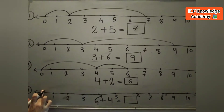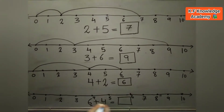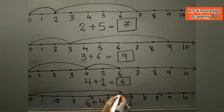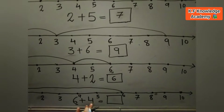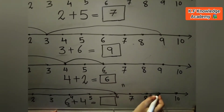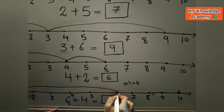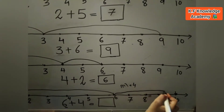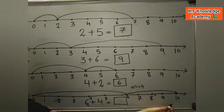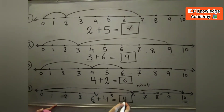Next one is 6 plus 4 is equal to. We see the 0 to 6 numbers and make a half circle. Then after 6, we add 4 numbers: 6 to 7 is 1, 7 to 8 is 2, 8 to 9 is 3, and 9 to 10 is 4. So 6 plus 4 is equal to 10. We match 6 to 10 and make a half circle.